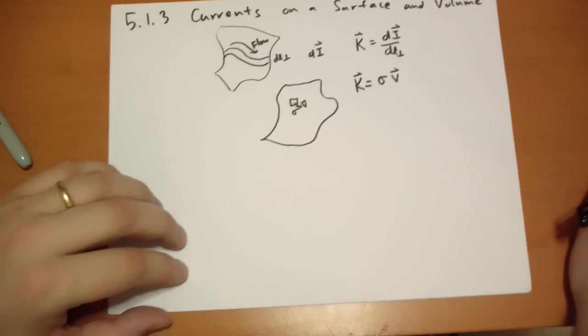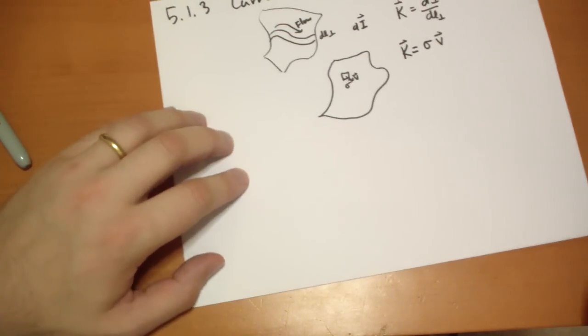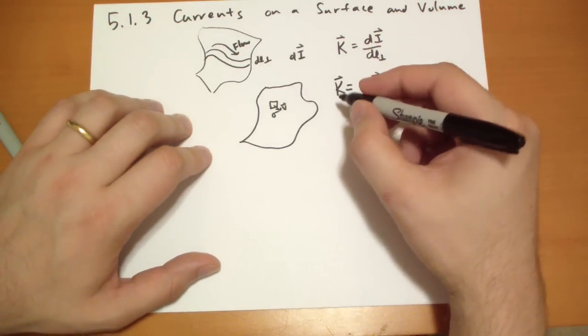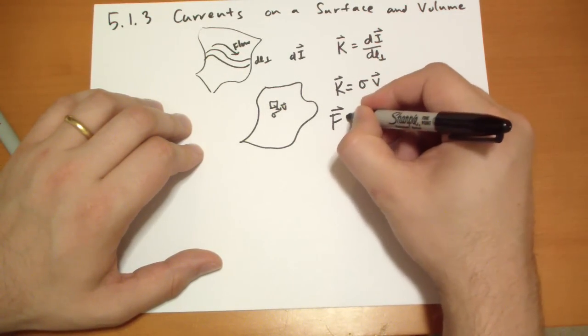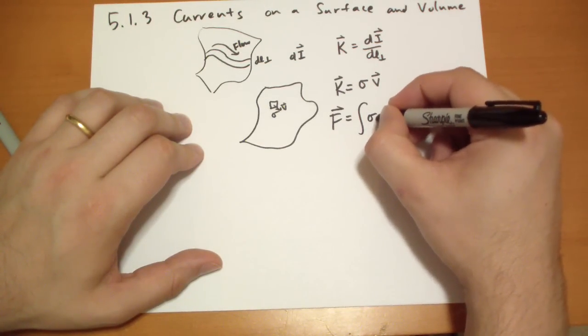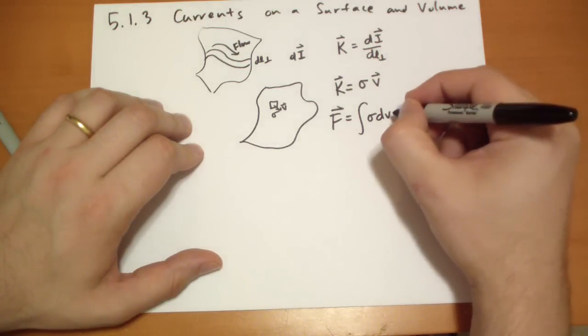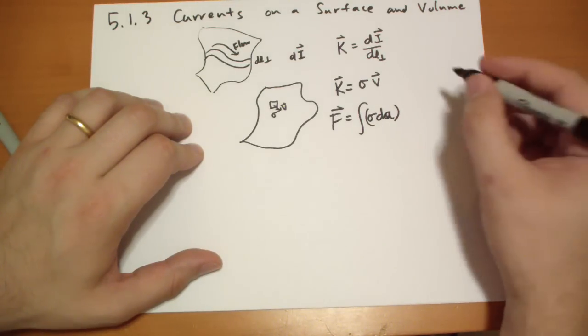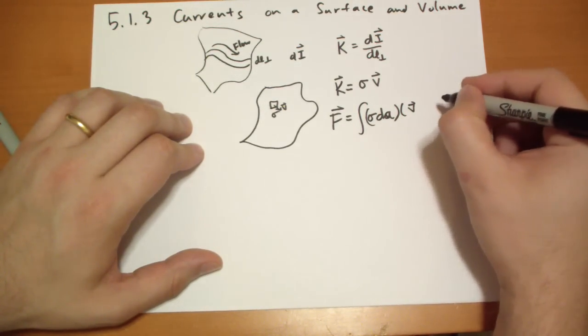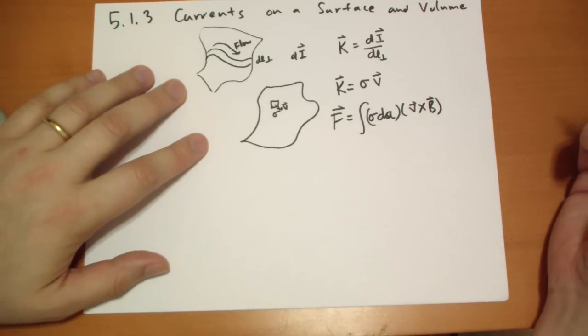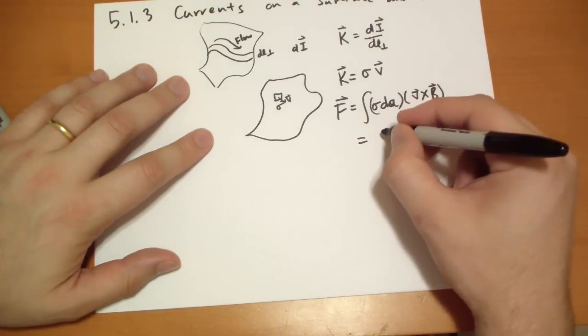The magnetic force on a surface, on a surface current, is equal to the integral sigma dA, that's the amount of charge there, that's charge, times the velocity of that charge crossed with the magnetic field, which can be rewritten as,